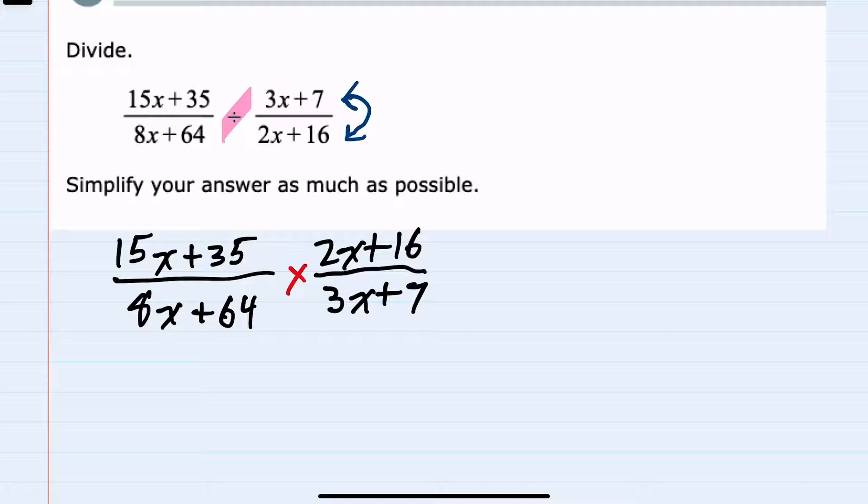And now that we have multiplication, we can get started by first factoring each of these four expressions, the two in the top and the two in the bottom, with the goal of seeing if anything will cancel. So starting in the upper left-hand side.